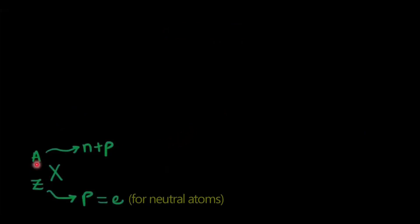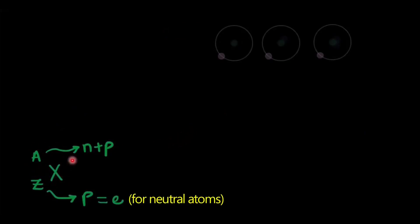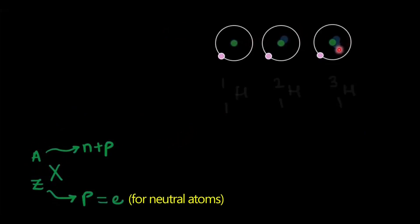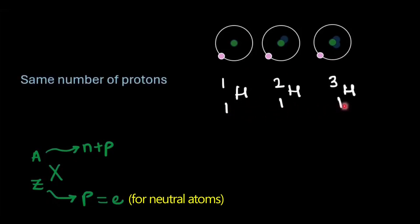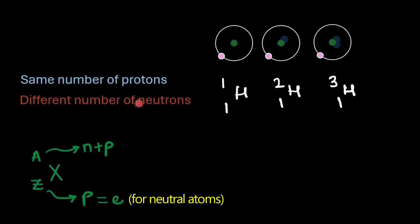We are all familiar with the representation of an atom. These three forms of Hydrogen can be represented in the following manner. They have the same number of protons, hence the same value of Z. But since they have different numbers of neutrons or nucleons, they have a different value of mass number.